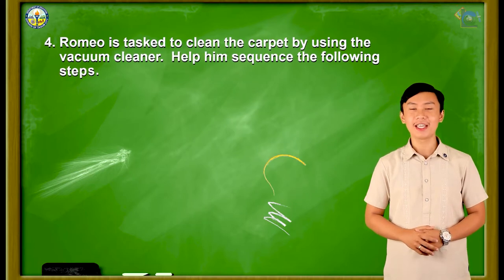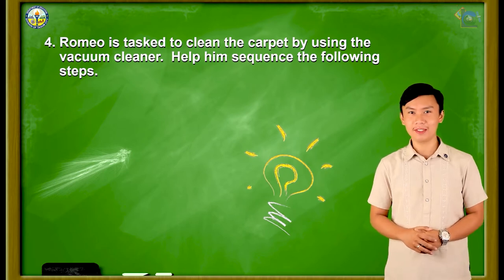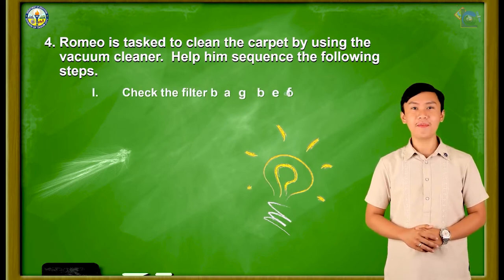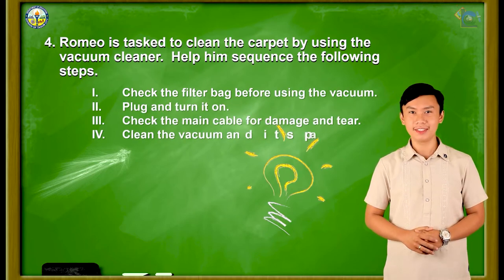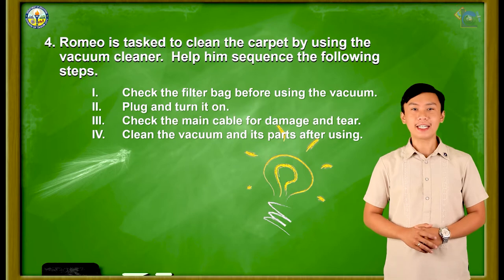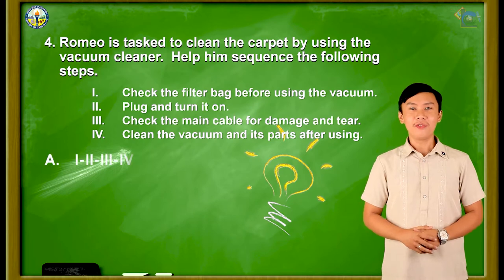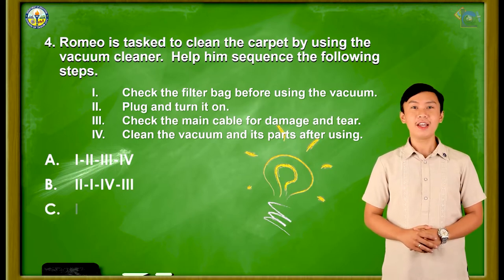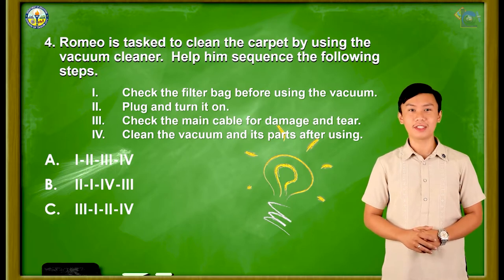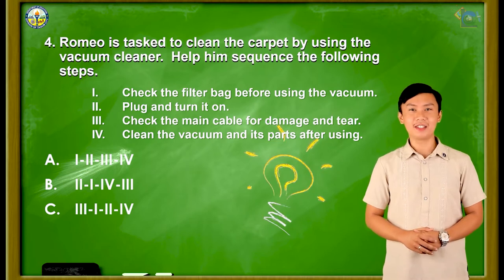Question number 4: Romeo is tasked to clean the carpet by using a vacuum cleaner. Help him sequence the following steps — First: check the filter bag before using the vacuum. Second: plug and turn it on. Third: check the main cable for damage and tear. Fourth: clean the vacuum and its parts after using. Letter A: first, second, third, fourth. Letter B: second, first, fourth, third. Letter C: third, first, second, and fourth. The correct answer is letter C.